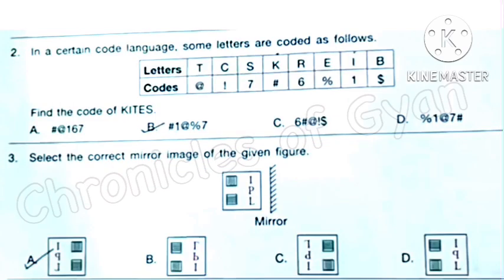Question 2: In a certain code language, some letters are coded as follows. Find the code of kites. Correct answer is option B.